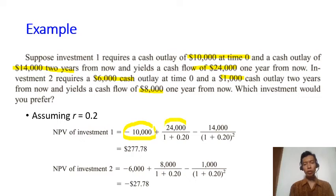And then this twenty-four thousand dollars from one year from now, we divide it with one plus zero point twenty. And then fourteen thousand dollars two years from now, we divide it with one plus zero point twenty to the power of two.